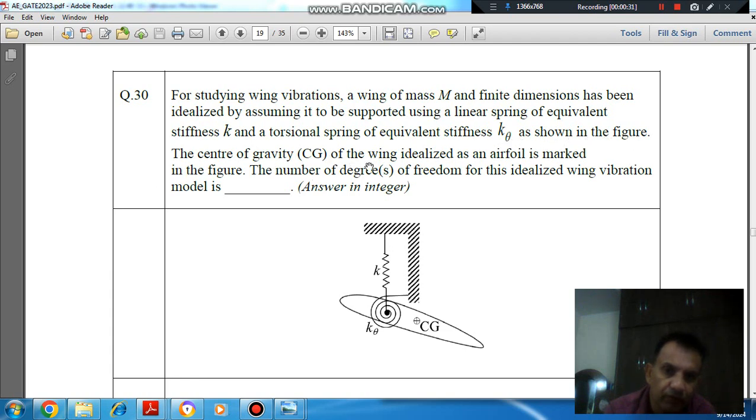The center of gravity CG of the wing, idealized as an airfoil, is marked in the figure. The number of degrees of freedom for this idealized wing vibration model is...